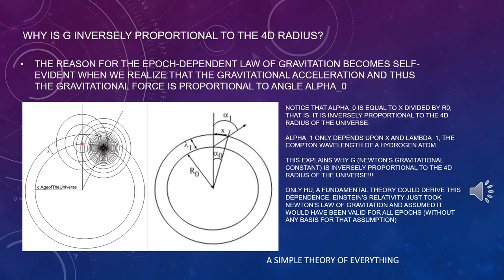Why is G inversely proportional to the 4D radius of the universe? The reason for the epoch-dependent law of gravitation becomes self-evident when we realize that the gravitational acceleration and thus the gravitational force is proportional to angle alpha 0. Notice that alpha 0 is equal to x divided by R0. That is, it is inversely proportional to the 4D radius of the universe. Alpha 1 only depends upon x and lambda 1, the Compton wavelength of a hydrogen atom. This explains why G, Newton's gravitational constant, is inversely proportional to the 4D radius of the universe. Only HU, a fundamental theory, could derive this dependence. Einstein's relativity just took Newton's law of gravitation and assumed it would have been valid for all epochs, without any basis for that assumption.